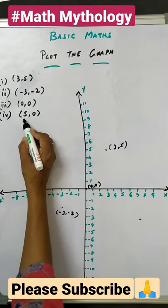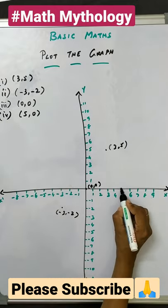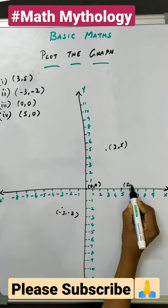5 comma 0. So your x value is 5 and y is 0. We have to plot the point in the x axis, that is 5 comma 0 comes in the x axis.